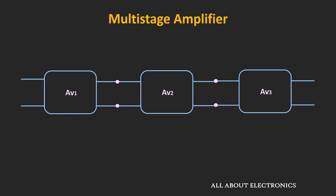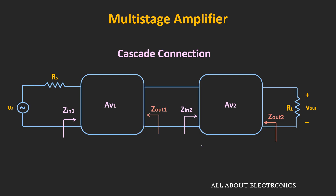When we cascade multiple amplifier stages, ideally the overall voltage gain is the product of the individual voltage gains — Av1 × Av2 × Av3. But actually, each amplifier stage acts as a load to the previous stage, and because of this loading effect, the effective voltage gain will be less than the product of the individual gains. To understand this, consider two cascaded amplifier stages, where Zin1 and Zout1 are the input and output impedances of the first amplifier, and Zin2 and Zout2 are those of the second. The second amplifier acts as a load for the first — specifically, the input impedance Zin2 of the second amplifier acts as the load RL for the first amplifier.